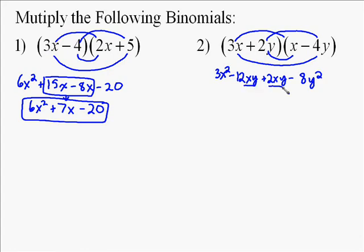Again, I look for like terms. Well, this one has like terms, xy. They both have an x and a y in it, so I can add those together. So negative 12 plus 2 gives me negative 10.